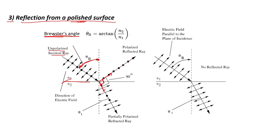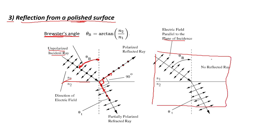The refracted ray is partially polarized — some of both vibration directions are present. Suppose we now send a light which is vibrating in the plane of incidence and it is polarized in that direction. As it is incident on the polished surface, there is no light vibrating parallel to this smooth surface, so there will be no reflected ray — because there was no vibration direction parallel to the surface. Only refraction will take place.